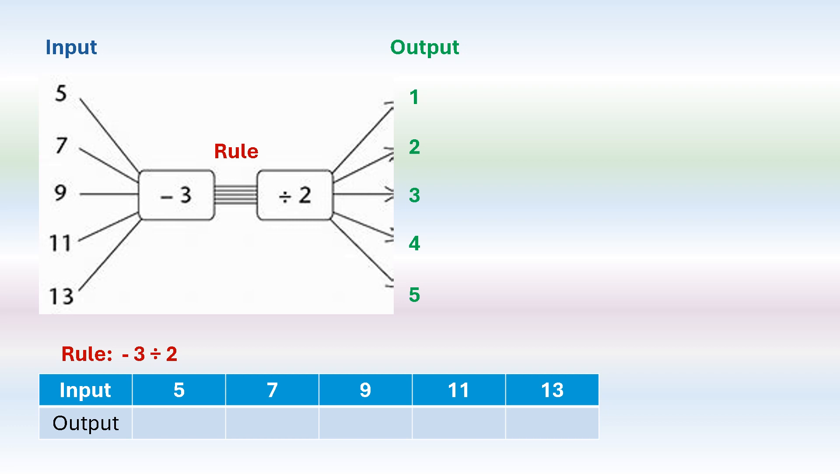And we take each input value and we use it with the rule to get the output. So we'll say 5 subtract 3 divided by 2 is 1. 7 subtract 3 is 4 divided by 2 is 8. 9 subtract 3 is 6 divided by 2 is 3.